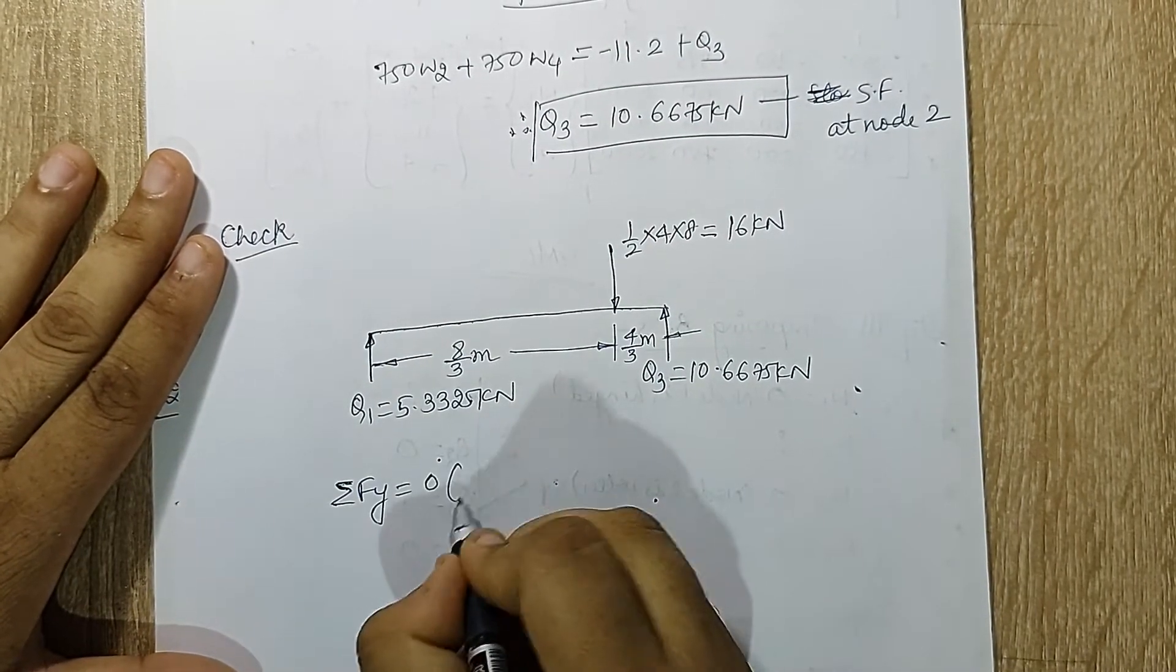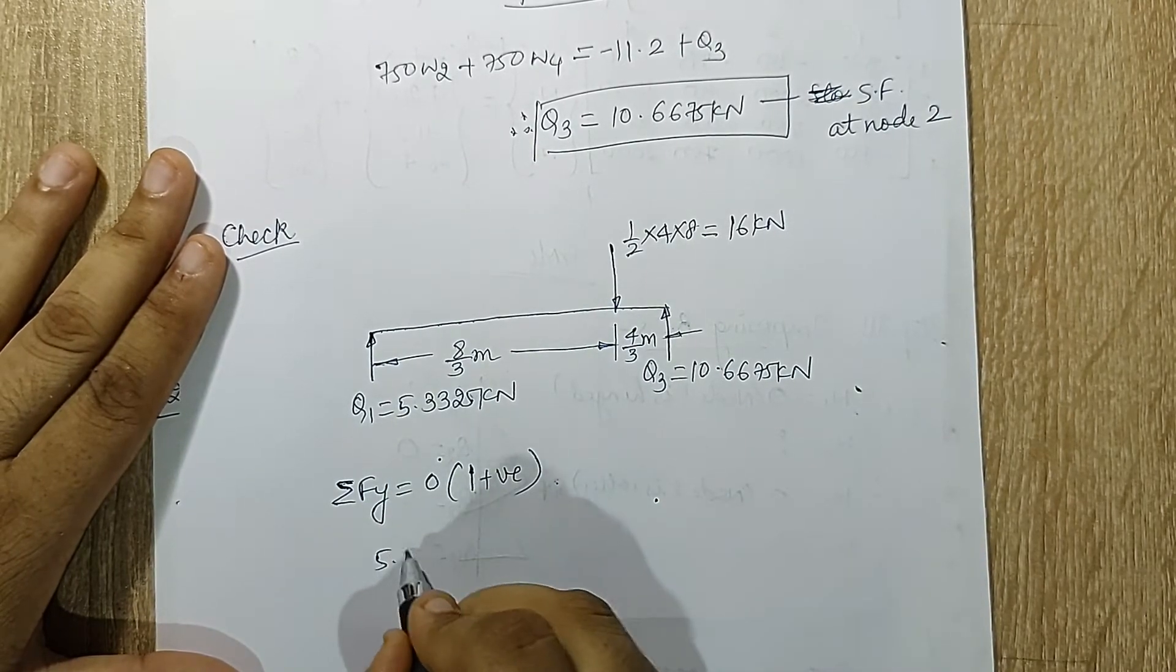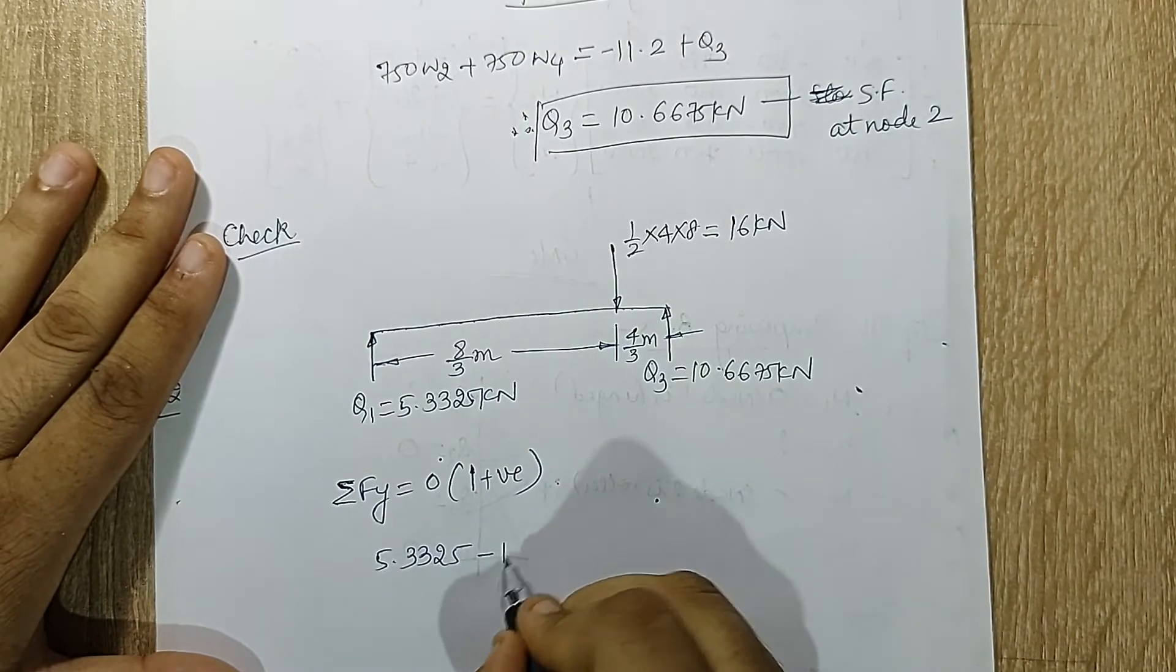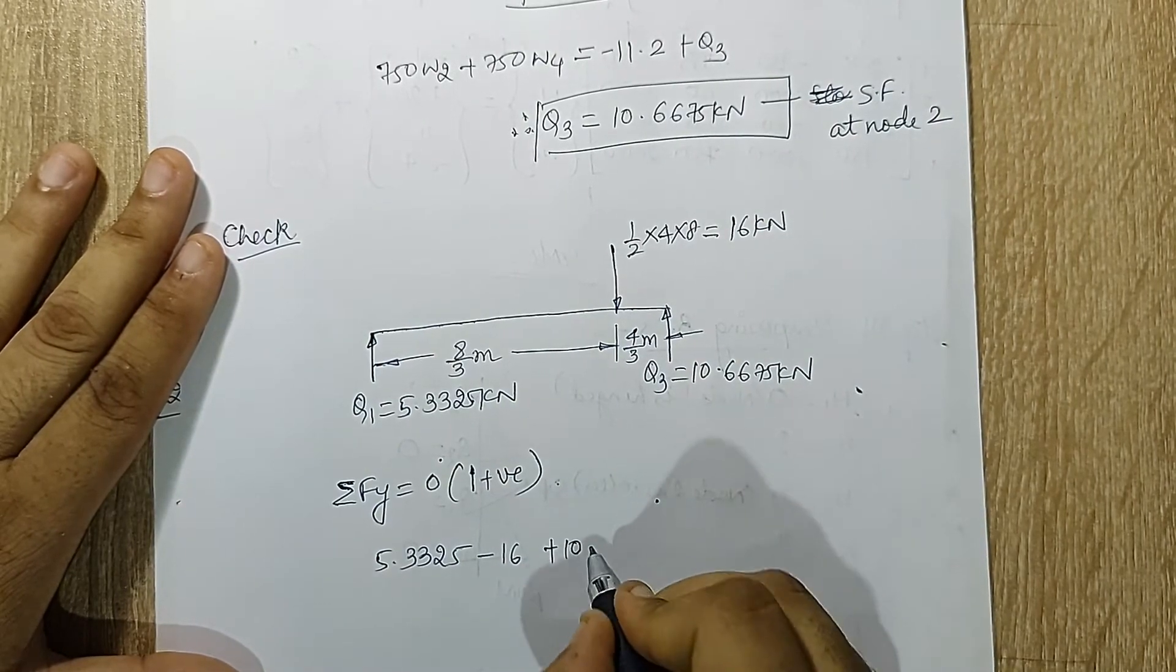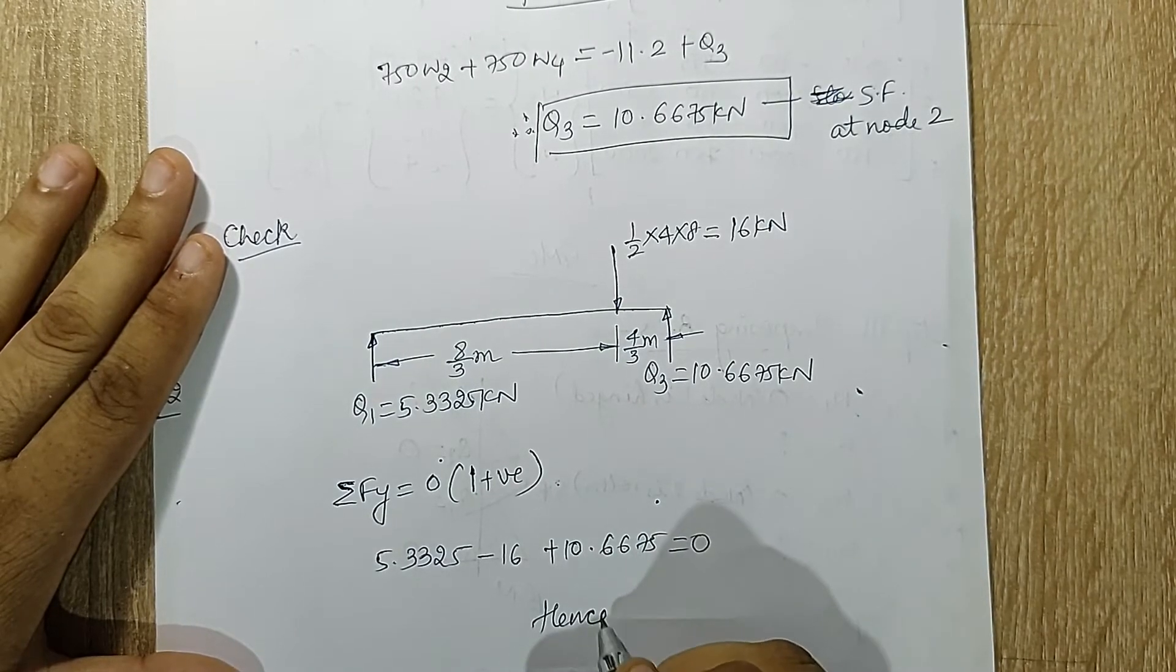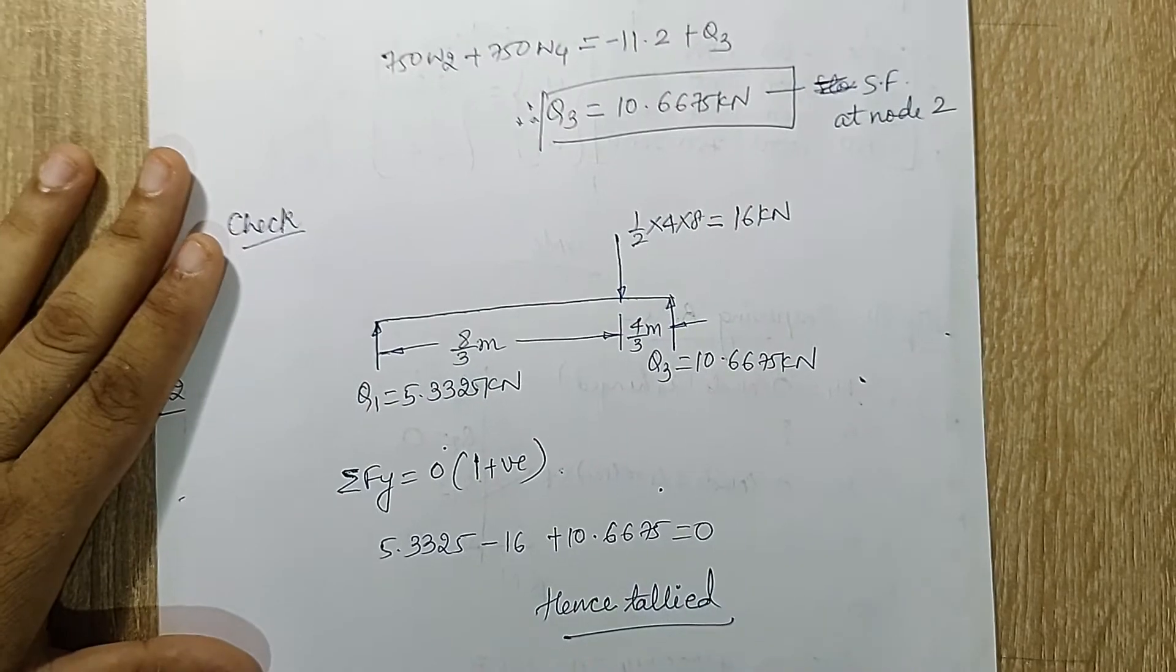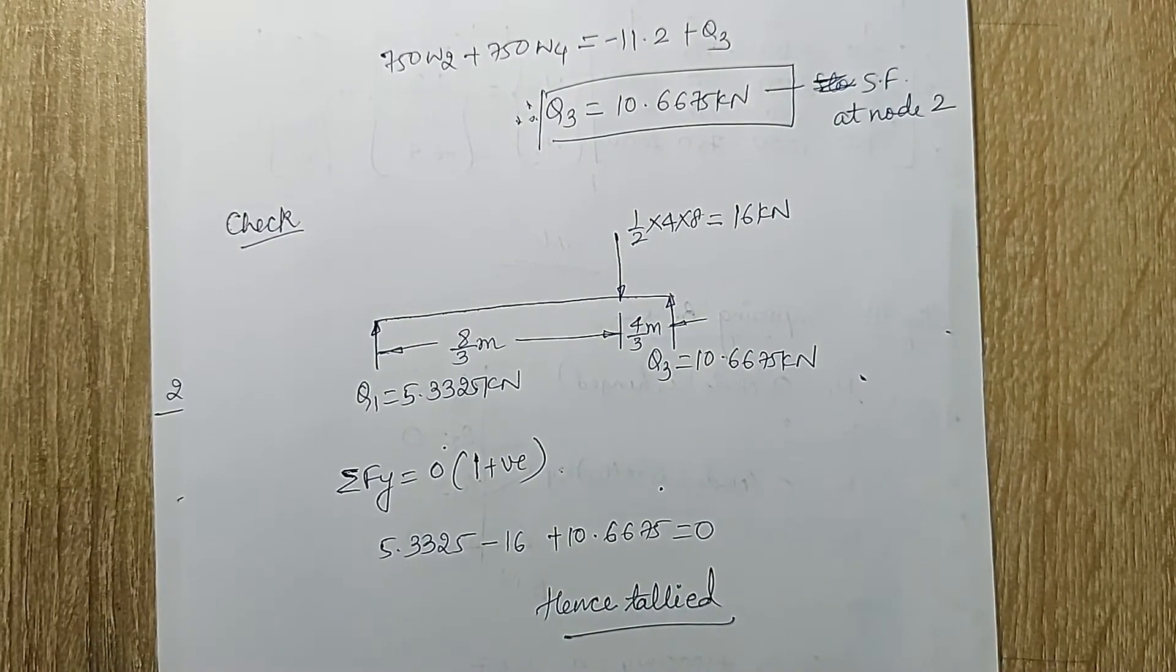Now let's solve summation of force in y direction should be zero. I'll consider upward force as positive. So this is going upward, this is going downward, and this is going upward. When you solve this, you get an exact zero, which means I have tallied my solution here. I don't have to check for moment because there is no value of q2 and q4 bending moment, so I need not solve for that in this question.